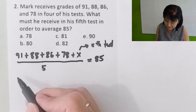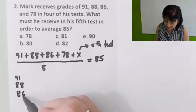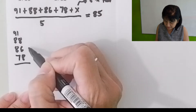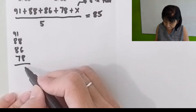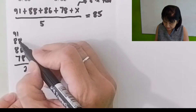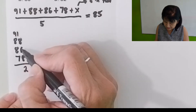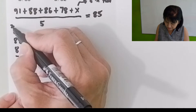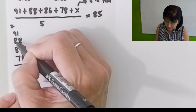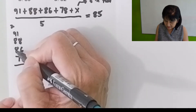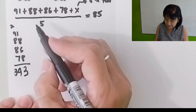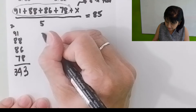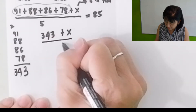Add all of them: 91 plus 88 plus 86 plus 78 equals 343. That means the equation is 343 plus x all over 5 equals 85.